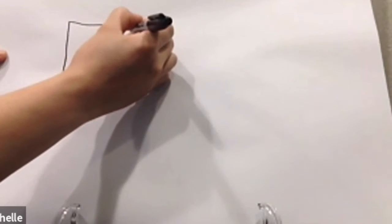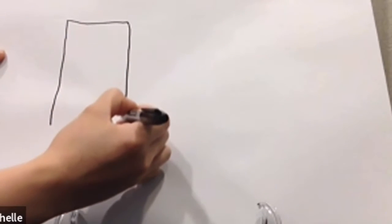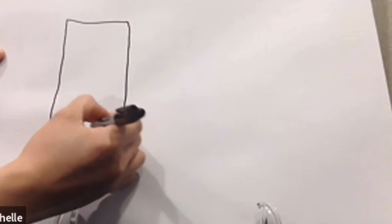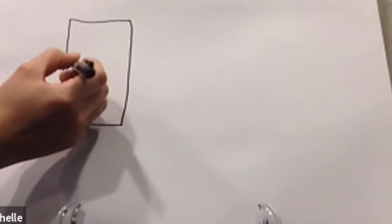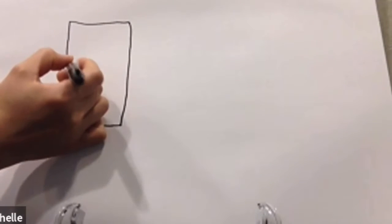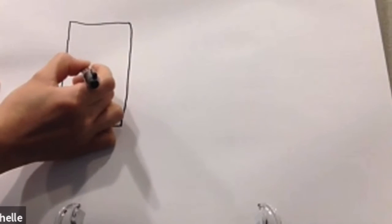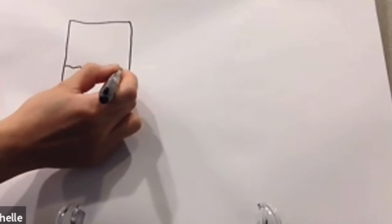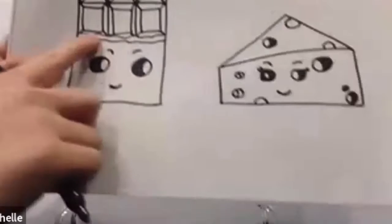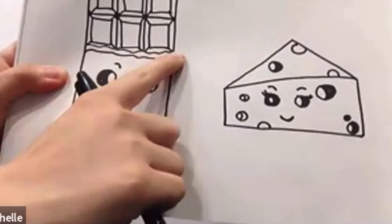So we're just going to draw a single rectangle. It doesn't need to be perfect. Then after that we're going to make a wiggly line in the middle of that right side there, kind of like this. This is going to be the wrapper of the chocolate that was torn halfway.